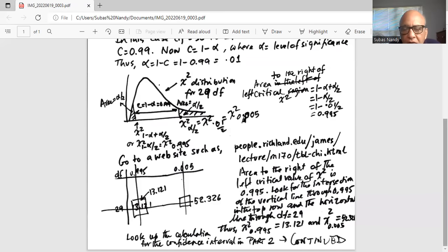Hence, chi-square 0.995 is 13.121 and chi-square 0.005 is 52.326. In order to find the confidence interval for the variance and standard deviation, we'll go to part two.